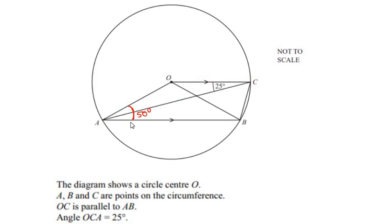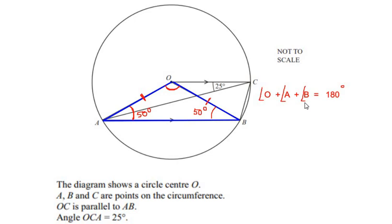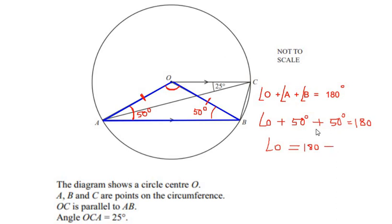Now let us look at triangle OAB. Triangle OAB is also an isosceles triangle because side OA and side OB are radii of the same circle. So if angle A is 50 degrees, then angle B is also 50 degrees. Using the angle sum property: angle O plus angle A plus angle B equals 180 degrees. Substituting: angle O plus 50 plus 50 equals 180, so angle O equals 180 minus 100, which gives angle O as 80 degrees.